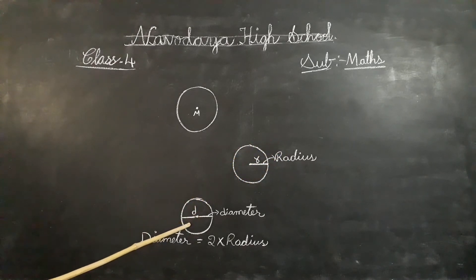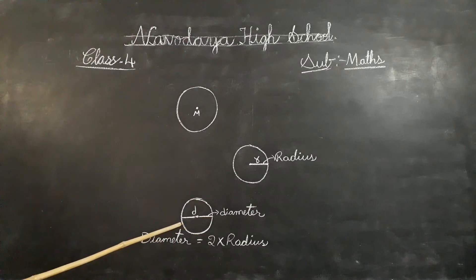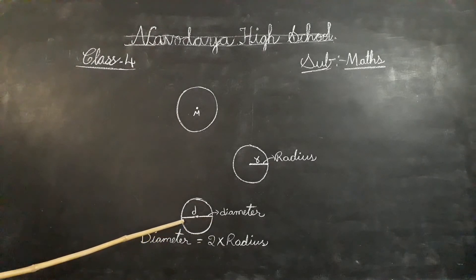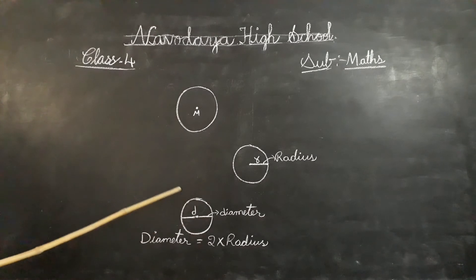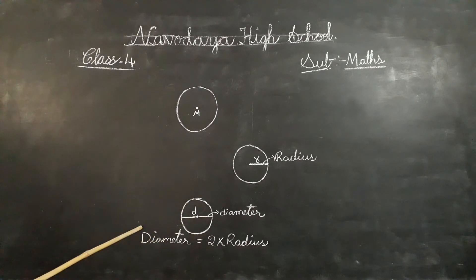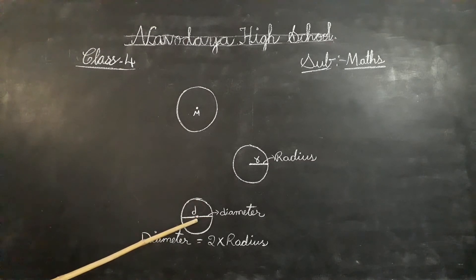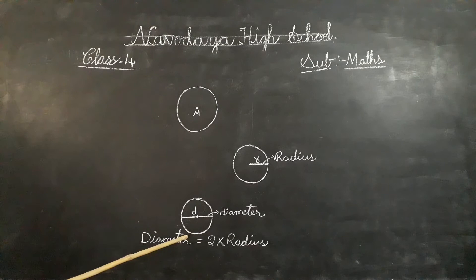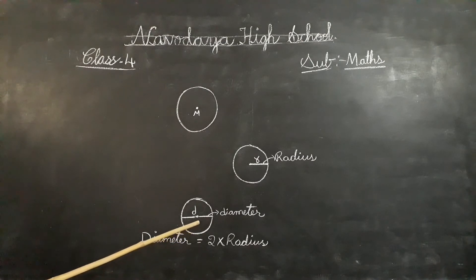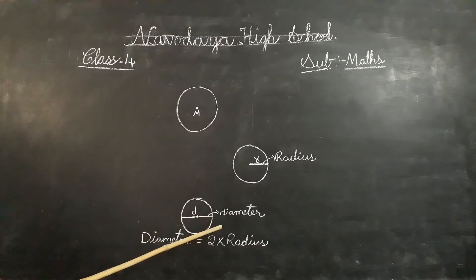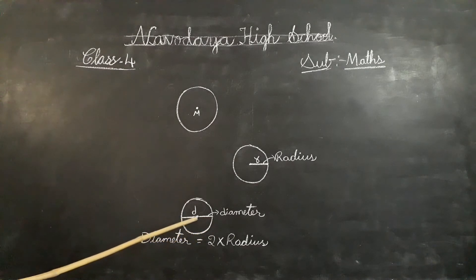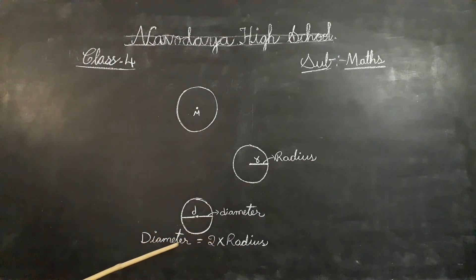The diameter goes right across the center of the circle. The center of a circle is the midpoint of the diameter. The diameter can be described as a straight line that connects any two end points in a circle while passing through its center. It is twice the length of the radius, so diameter equals 2 times radius.